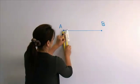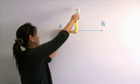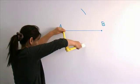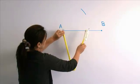Open your compass so that the opening is more than half the length of the line. Place the point of the compass on point A and draw a large arc that starts above the line and ends below the line.